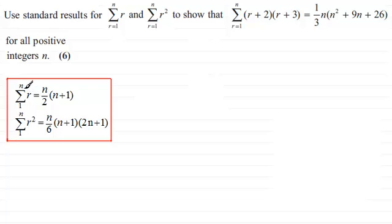The sum of the first n terms of r is equal to n over 2 times n plus 1. And the sum of r squared going from r equals 1 to n is equal to n over 6 times n plus 1 times 2n plus 1.